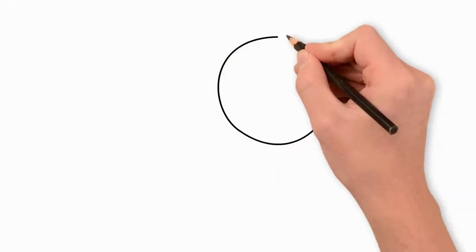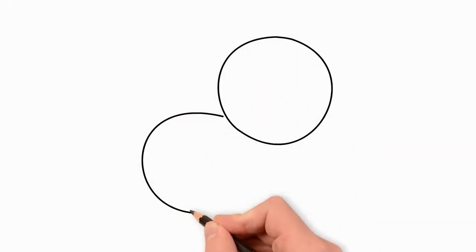How to easily draw a cat with a pencil step by step. To quickly and easily draw a cat, first, let's draw two circles.